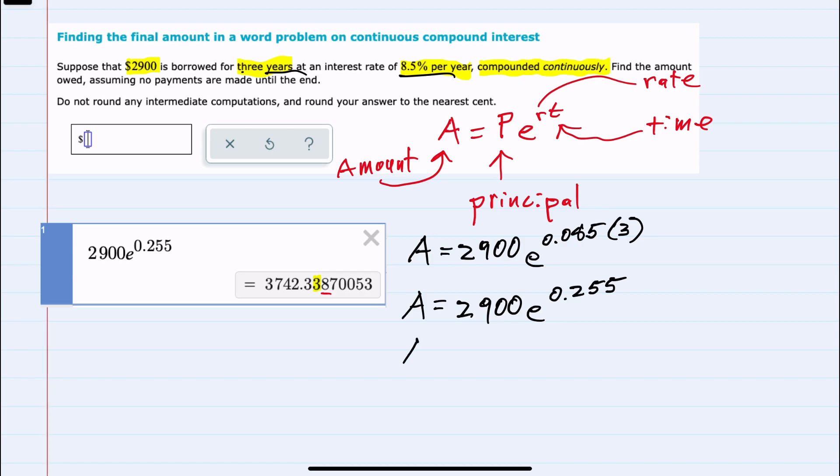Our amount after three years of continuous compounding would be $3,742.34.